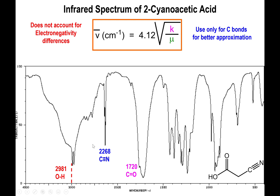The CN triple bond shows up at about 2200 inverse centimeters, so we see that feature as well. You don't have to have just one functional group present — you can have multiple functional groups, and you will see the different peaks for each one, provided they don't overlap entirely. So that's nice to see in this example.